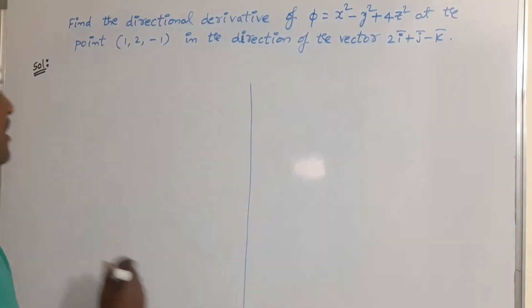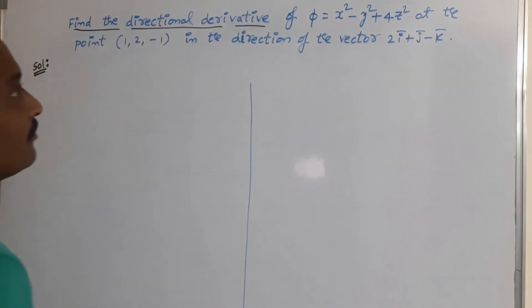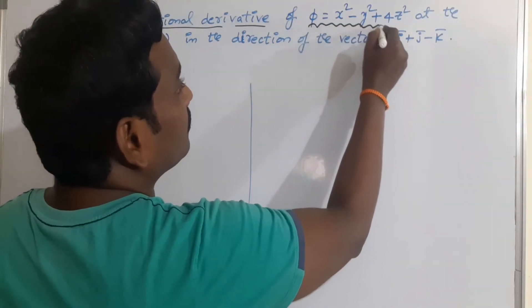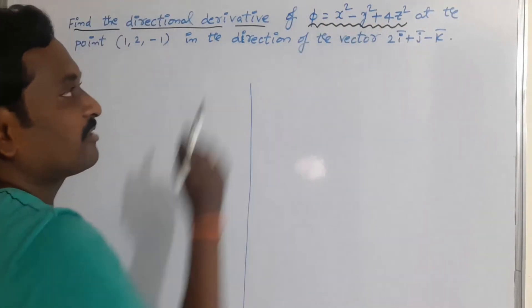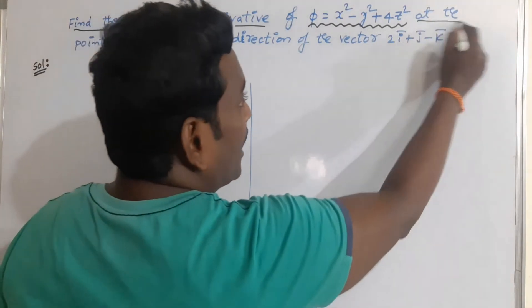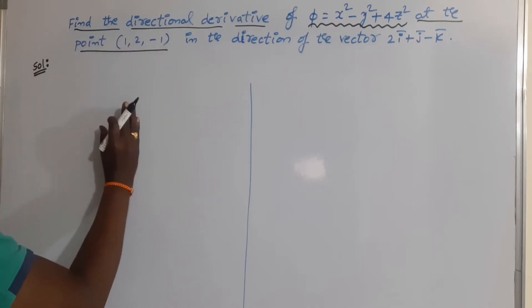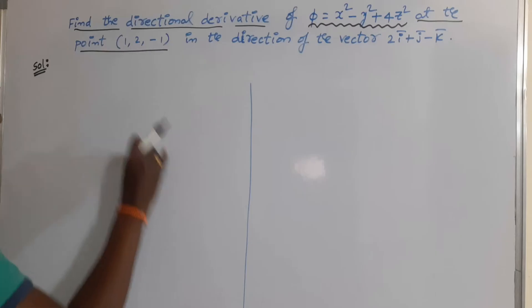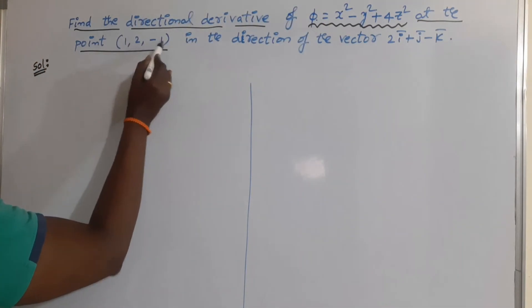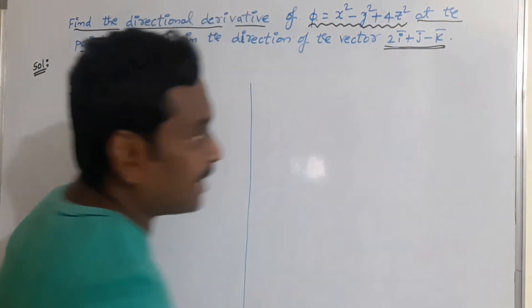Look at the statement of the given problem. Find the directional derivative of φ = x² − y² + 4z², which is clearly a scalar point function, at the point (1, 2, −1), in the direction of the vector 2i + j − k.